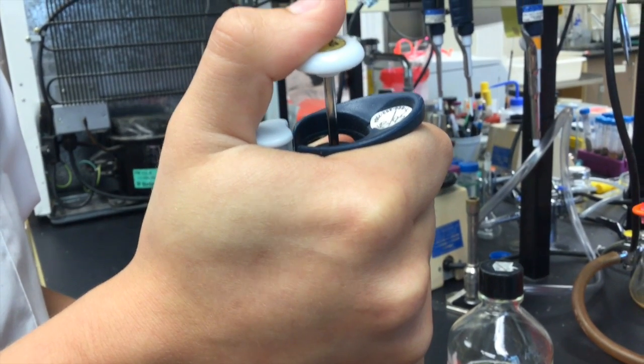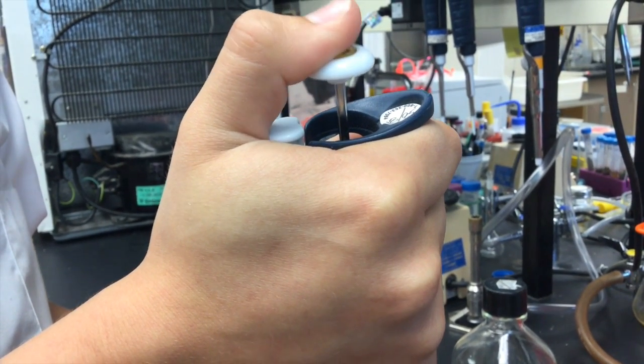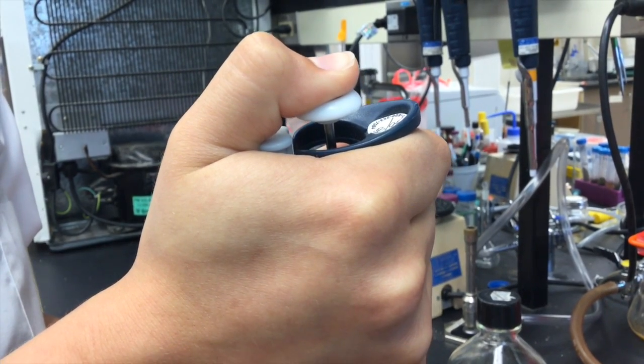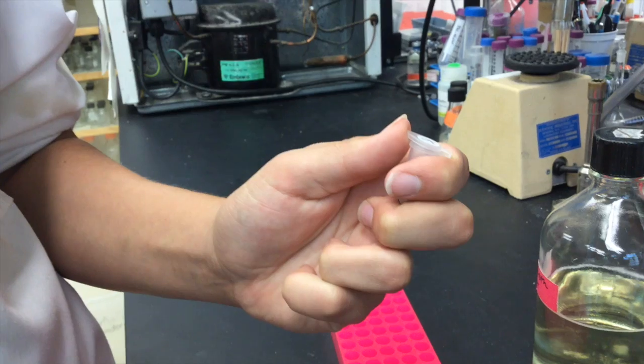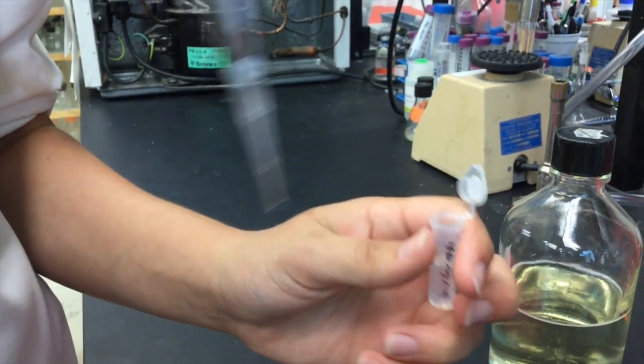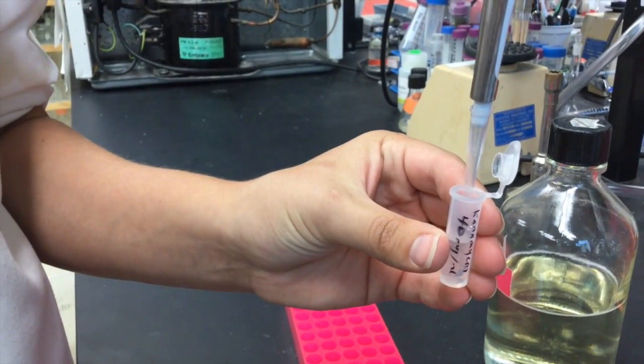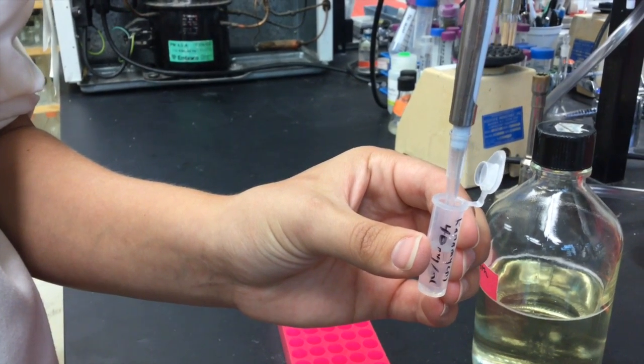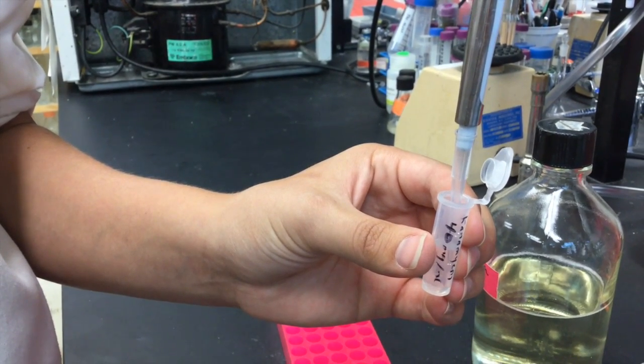Depress the plunger until you feel the initial resistance. This empties the micropipetter so that it can draw up the liquid. Remove the cap from the liquid and insert the tip into the solution. Make sure you place the tip just barely below the surface of the liquid and not as deep as possible.